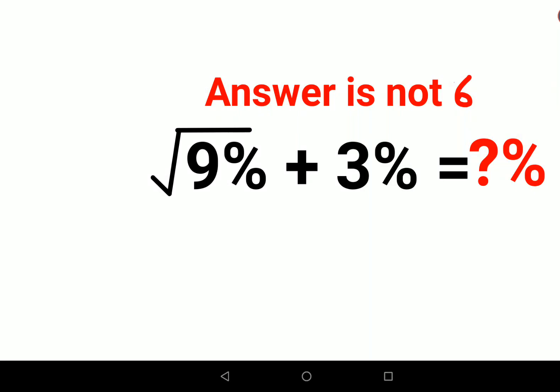Now please understand whenever you have a percentage sign following a number, you can convert it into a fraction by dividing that number by 100. So similarly, if you have root of 9%, it can be written as root of 9 upon 100.